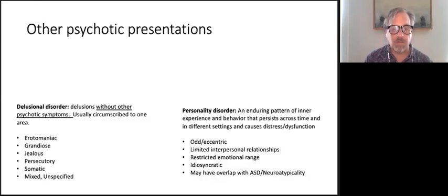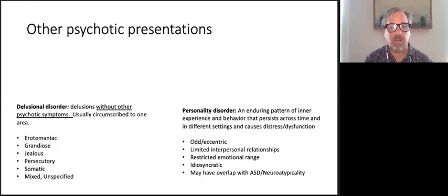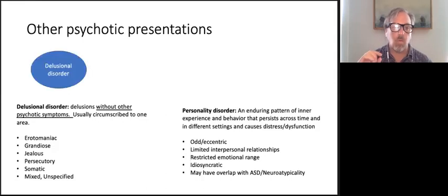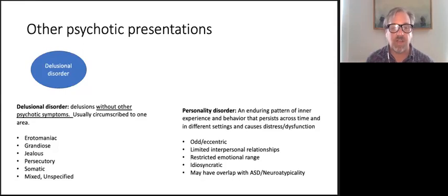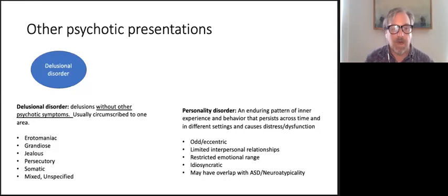Delusional disorder is fascinating because the person only has delusions but none of the other psychotic symptoms — typically no hallucinations and no poverty of thought or motivation. These are usually circumscribed to one area. An erotomanic delusion is that someone is in love with them or trying to seduce them. A grandiose delusion might be 'I'm going to be the next president.' A jealous delusion is a persistent belief that their partner is cheating despite all evidence. A persecutory delusion is that people or conspiracies are out to get them. A somatic delusional disorder involves a persistent belief that something is wrong with the body for which there is no evidence.